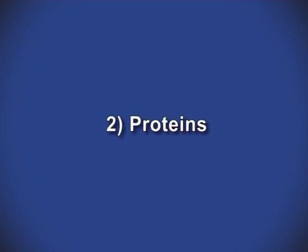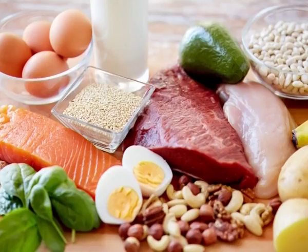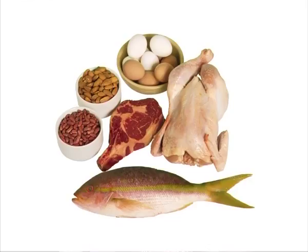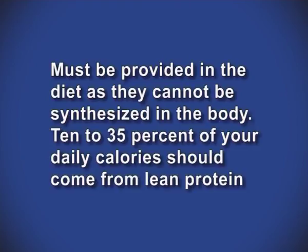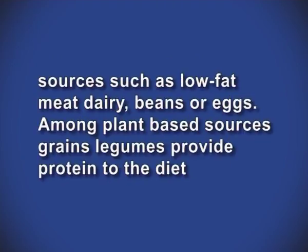Proteins are the major structural component of cells and are responsible for the building and repair of body tissues. Protein is broken down into amino acids which are the building blocks of the body. Nine of the 20 amino acids, known as essential amino acids, must be provided in the diet as they cannot be synthesized in the body. Ten to 35 percent of our daily calories should come from lean protein sources such as low-fat meat, dairy products and eggs. Among plant-based sources, grains and legumes provide protein to the diet.